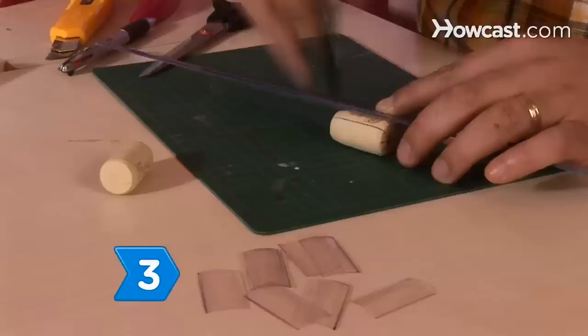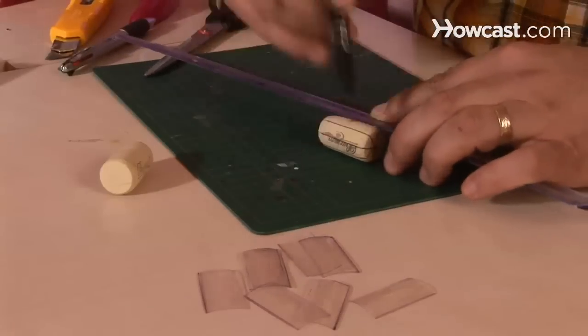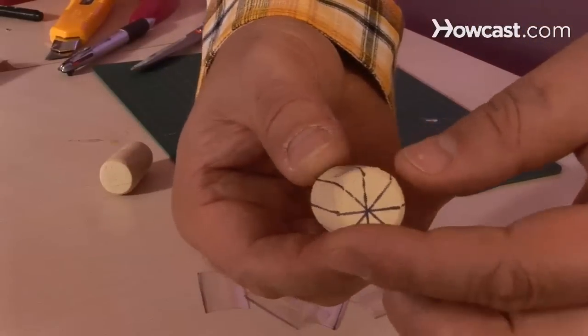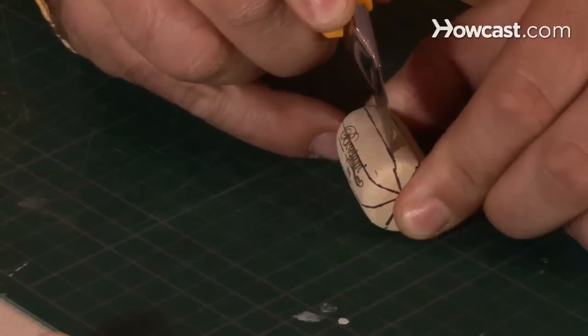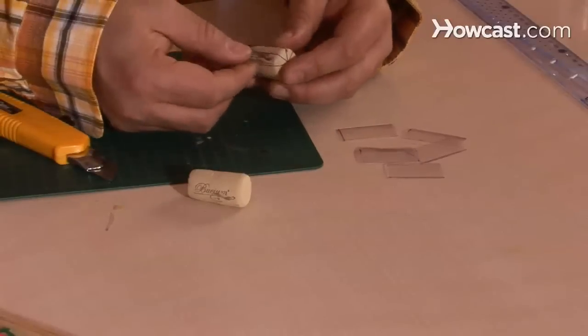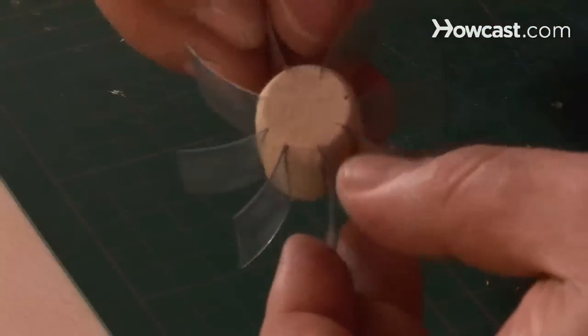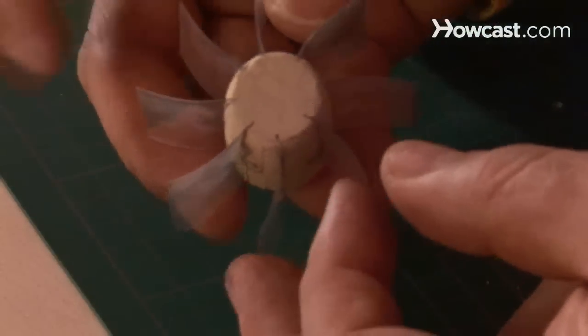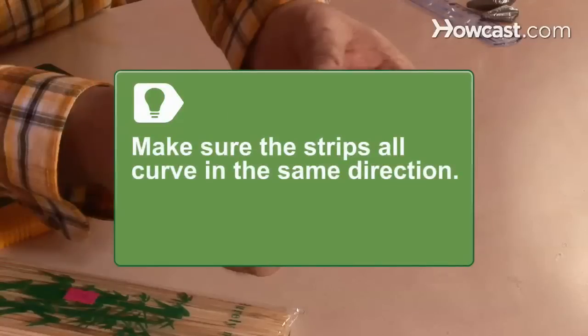Step 3. Draw 8 evenly spaced lines around the cork and make slits through the lines using the knife. Then slide one of the plastic strips into each slit. Make sure the strips all curve in the same direction.